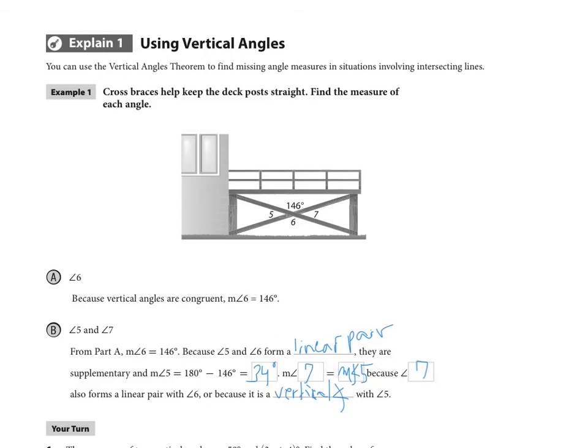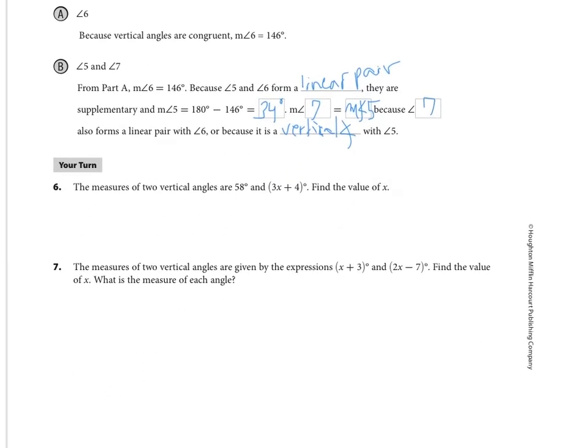Next I'm going to have you do a couple of quick your turns here. Your turns 6 and 7 are assigned for you. The measures of two vertical angles are 58 and 3x plus 4. Find the value of x. In this case you may need to use some algebra, but I would recommend that you draw a diagram before you set up your equation. Just like we did with the angle addition postulate or segment addition postulate, it always helps to do a quick sketch before you start making up the equation. So take a pause on the video and do those two problems now.